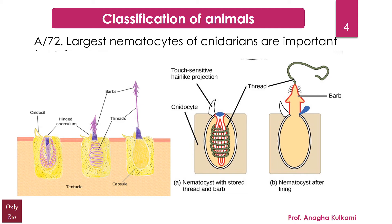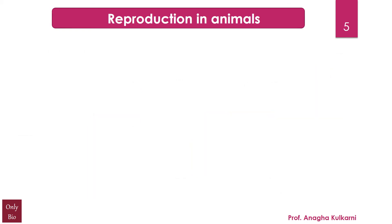The key difference: nidocytes are specialized cells containing the nematocyst, whereas the nematocyst is an organelle inside the nidocyte. The nematocyst is made up of an ejectable thread that causes the sting. So, nidocyte is an ectodermal cell in cnidarians, whereas nematocyst is an organelle. Nidocytes can also be called nidoblasts or nematocytes, and nematocysts can also be called nidocysts. Examples of cnidarians include corals, sea anemones, jellyfish, and hydra.